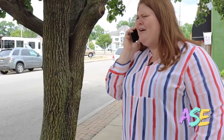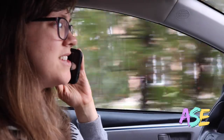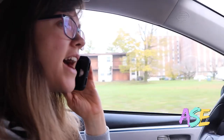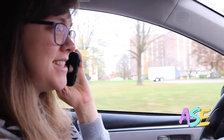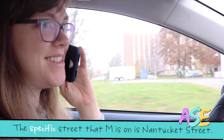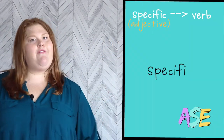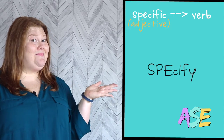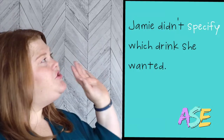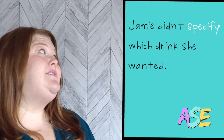Em, where are you? Hey Lauren, I'm just driving past some apartments. Which street are you on? It looks like a little residential street. Can you be specific? Oh, I see the sign. I'm on Nantucket Street. Bonus sentence! We can make specific a verb by cutting off the final C. So, Jamie didn't specify which drink she wanted, so her mother brought her tea — but she really wanted coffee.